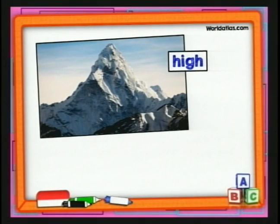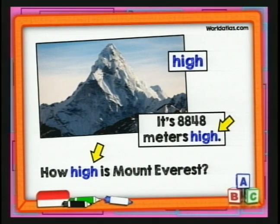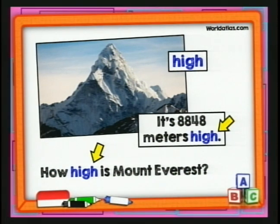Tenemos el adjetivo 'high', que quiere decir alto. ¿Cómo diría 'qué tan alto es el monte Everest'? Quedaría así: 'How high is Mount Everest?' La respuesta: 'It's 8,848 meters high.' Observen la palabra 'high' en la respuesta — significa 'de alto'. La pregunta dice qué tan alto es el Monte Everest, y la respuesta dice que es ocho mil ochocientos cuarenta y ocho metros de alto.